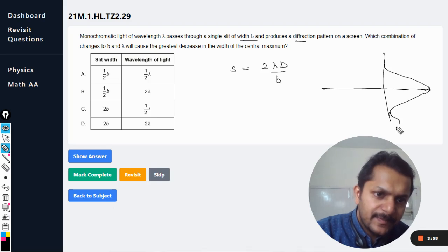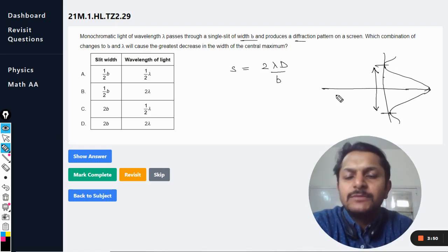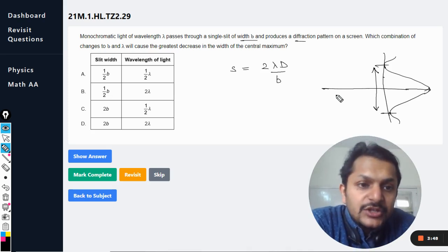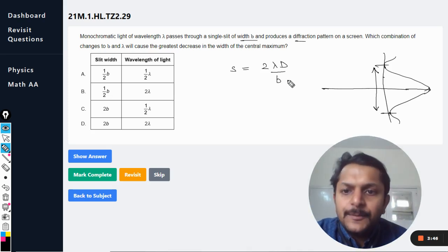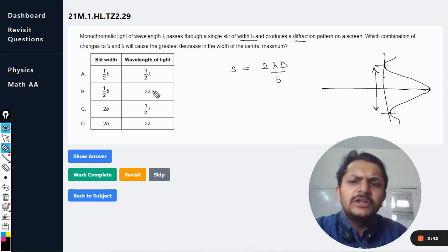It was somewhat like this, and this is what we want to find. This is coming out to be twice of lambda capital D divided by B. So this is the spacing, and now what is happening is that both